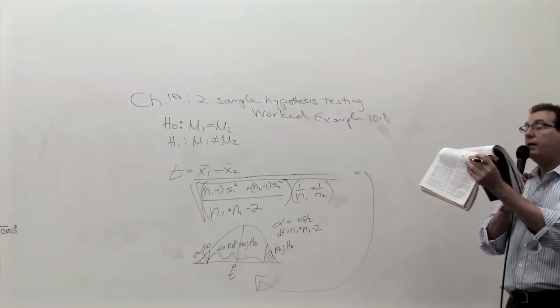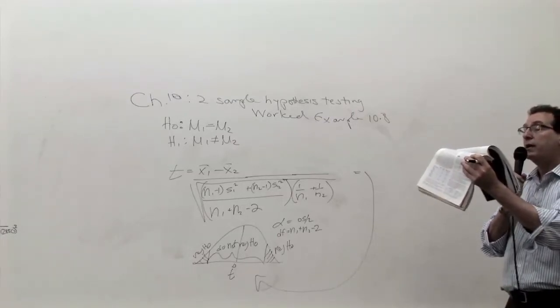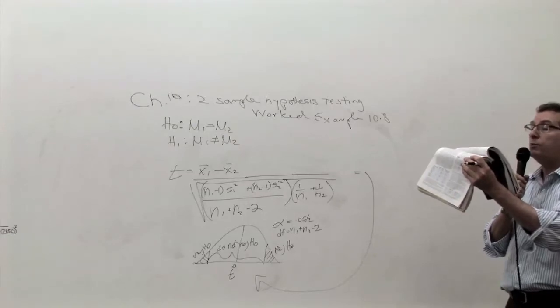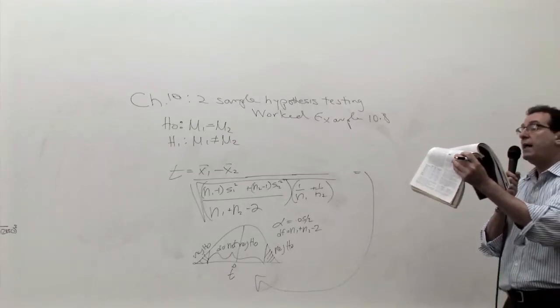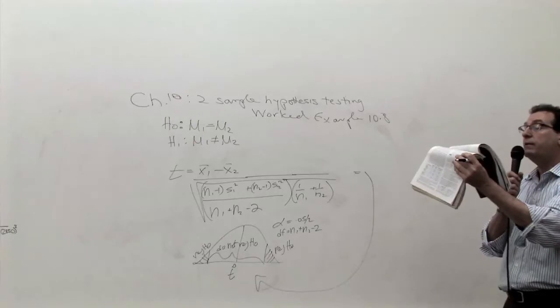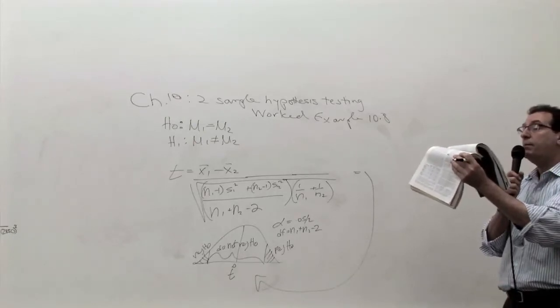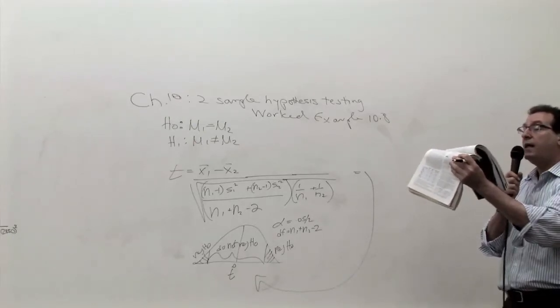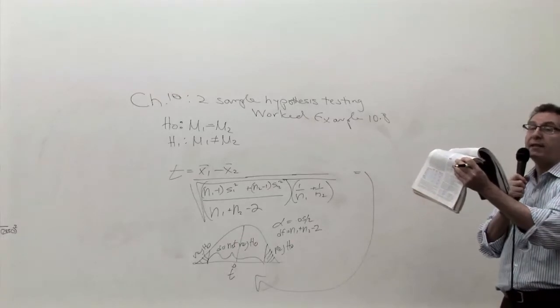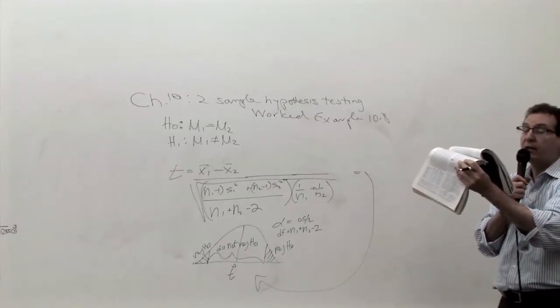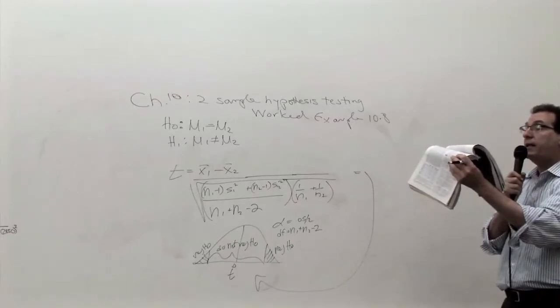A sample of 100 parts are taken from the old machine with an average of 65 and a sample standard deviation of 10. A similar sample of 100 from the new machine has an average of 72, so the new machine is slightly higher. The question is, is it significantly higher, with a standard deviation of 9?